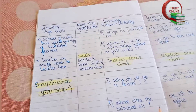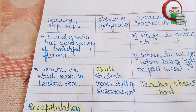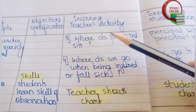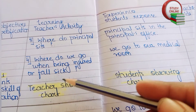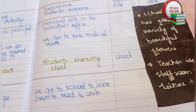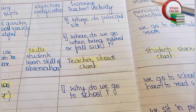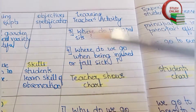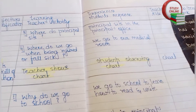The rest of Presentation 2 covers: the school garden has a good variety of beautiful flowers; teachers use the staff room in leisure time. Questions include: 'Where does the principal sit?' and 'Where do we go when injured or fall sick?' After explaining everything properly, the teacher once again teaches using a chart or model. Students observe the chart while the teacher explains.